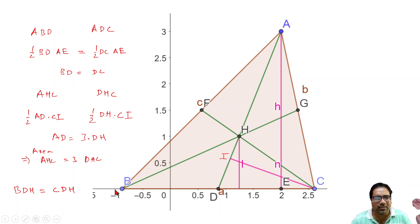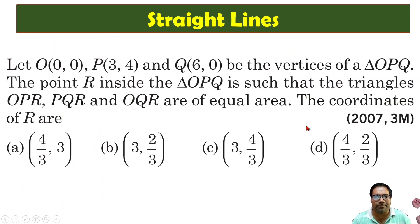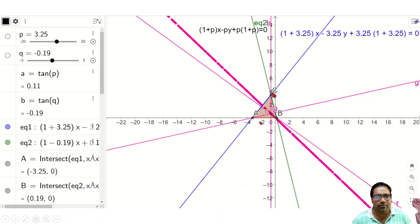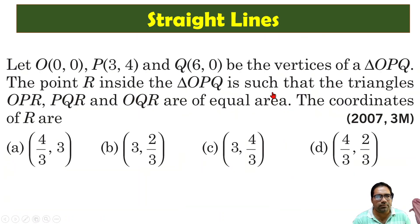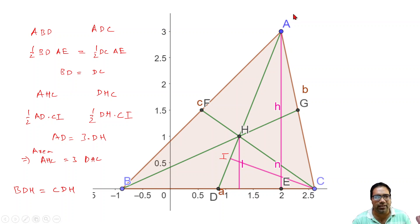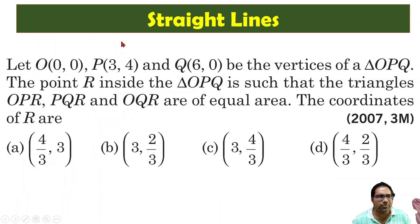BD should equal DC, BF should equal AF, and AG should equal GC. Now, let us look at triangles ABD and ADC. Both triangles have the same height AE and the same base, since BD equals DC because D is the midpoint. Therefore, the area of ABD equals the area of ADC.